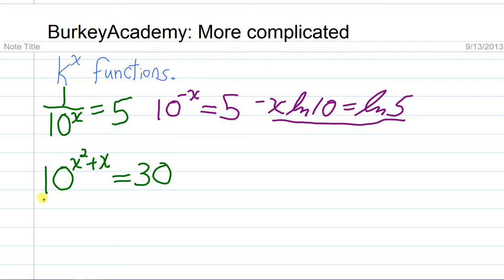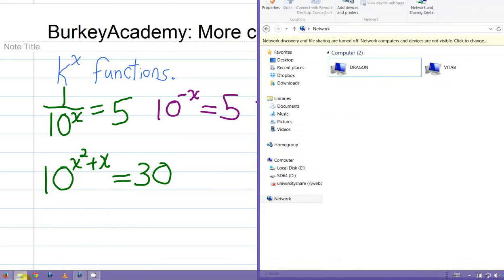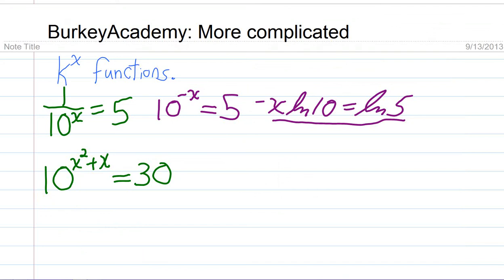Similarly, in this situation, not too tough. You just multiply by the exponent and then take the natural log of the base. And so what that would look like is this. x squared plus x, since that's the exponent, multiply that times the natural log of 10. And that equals the natural log of the other side.